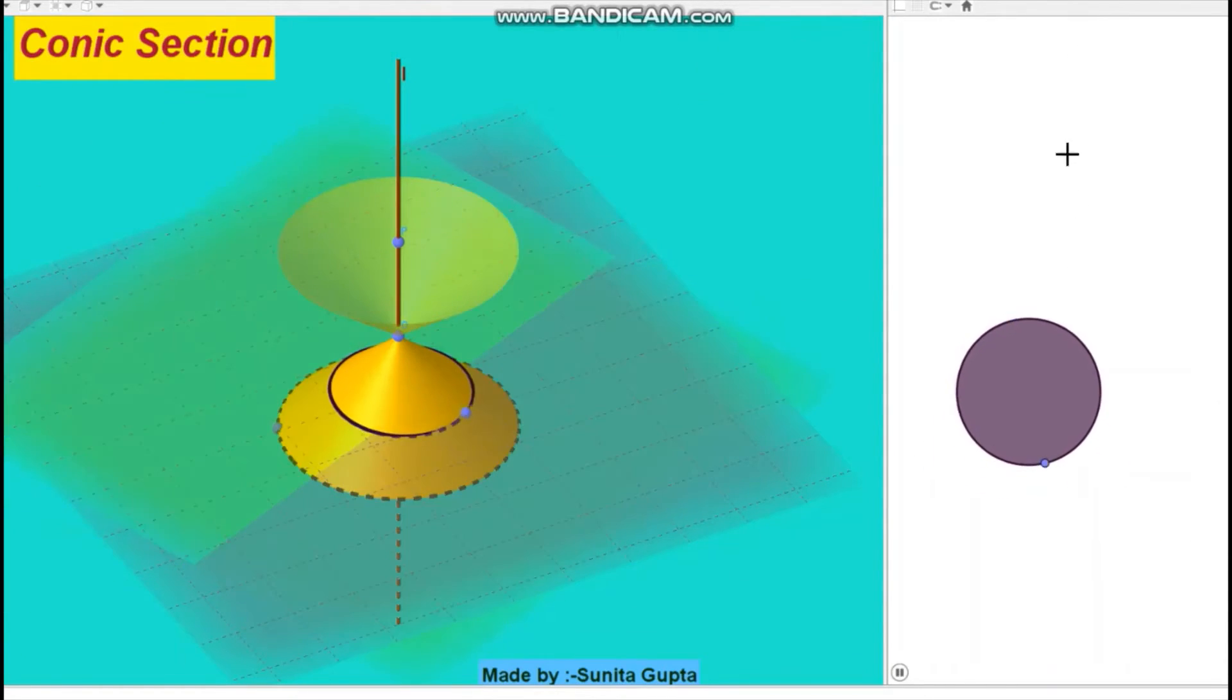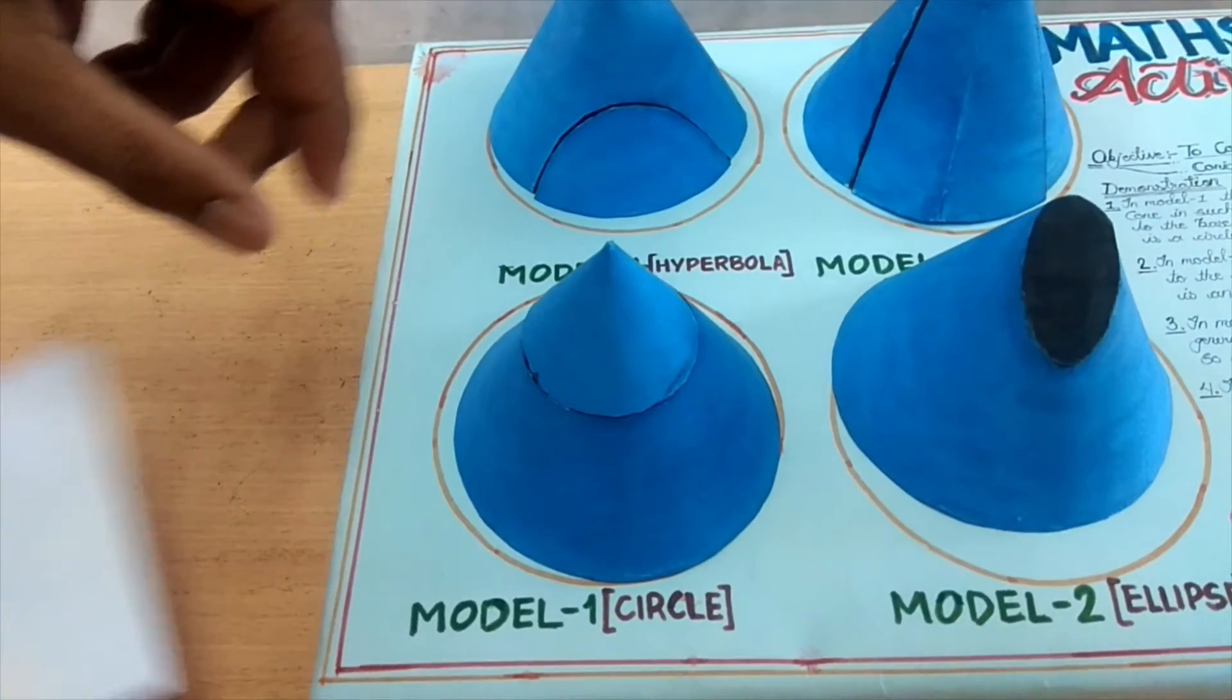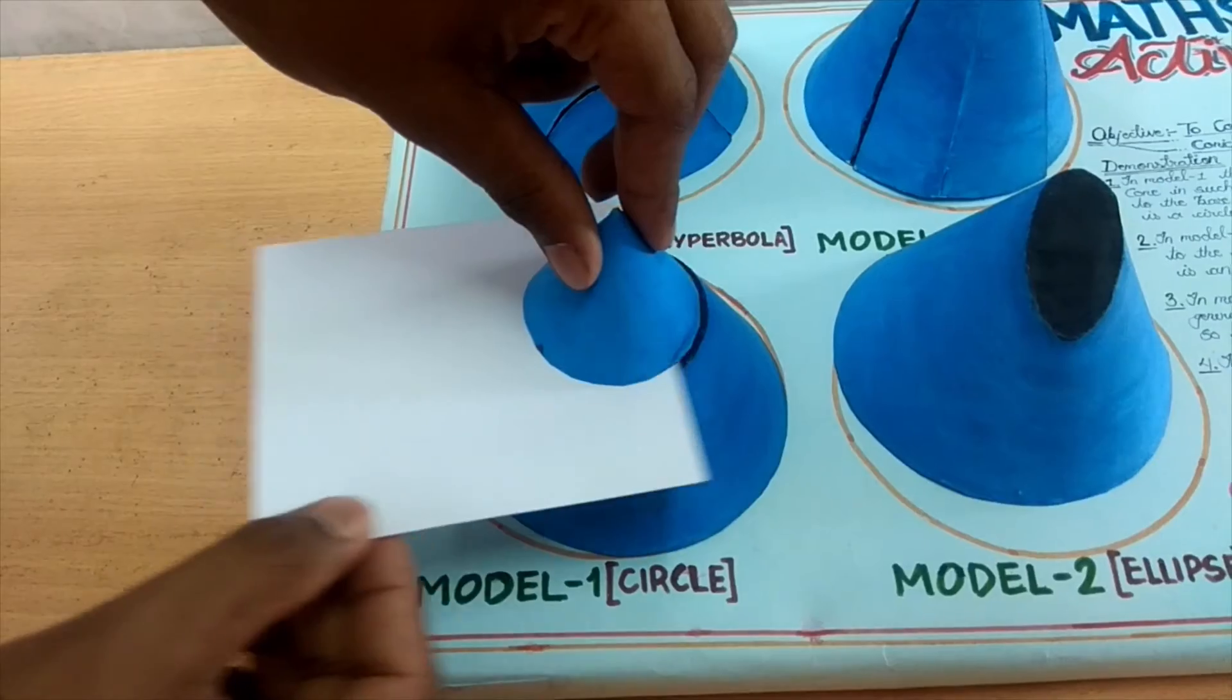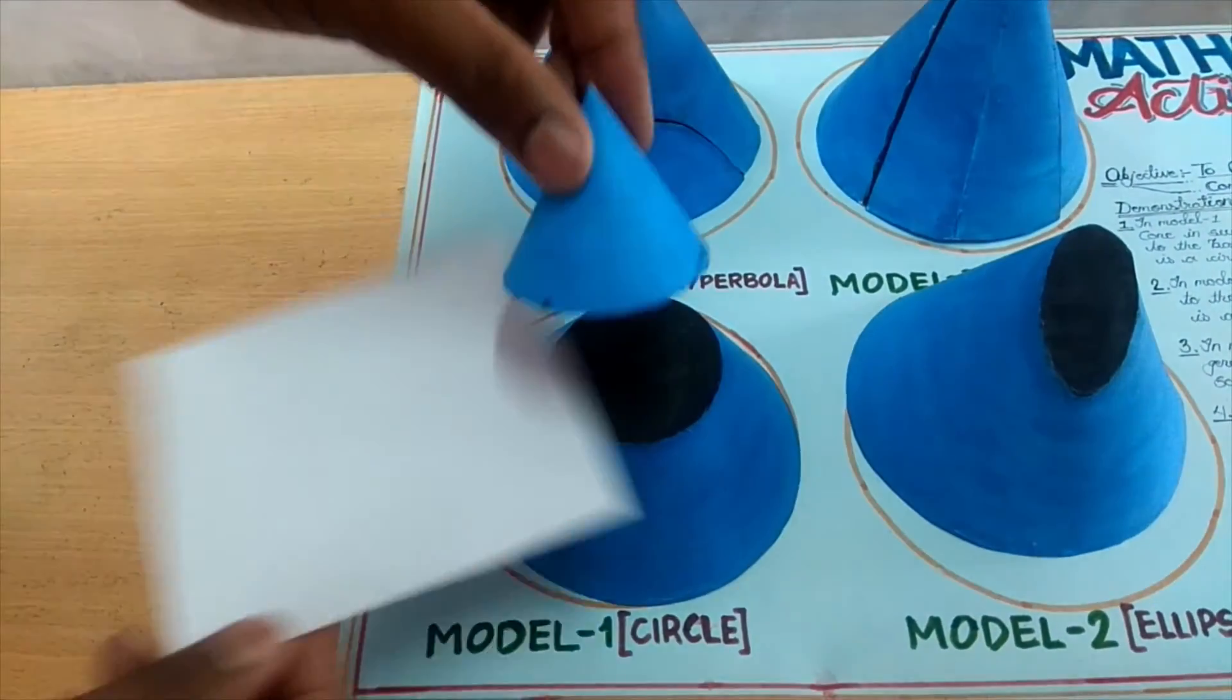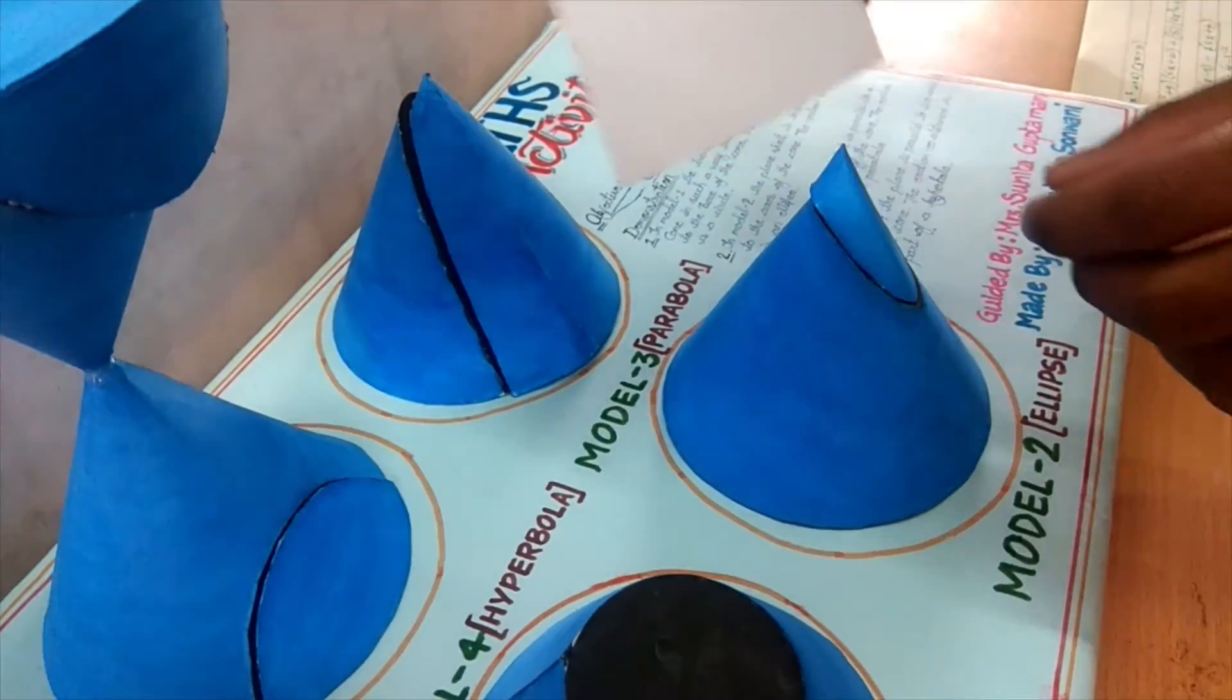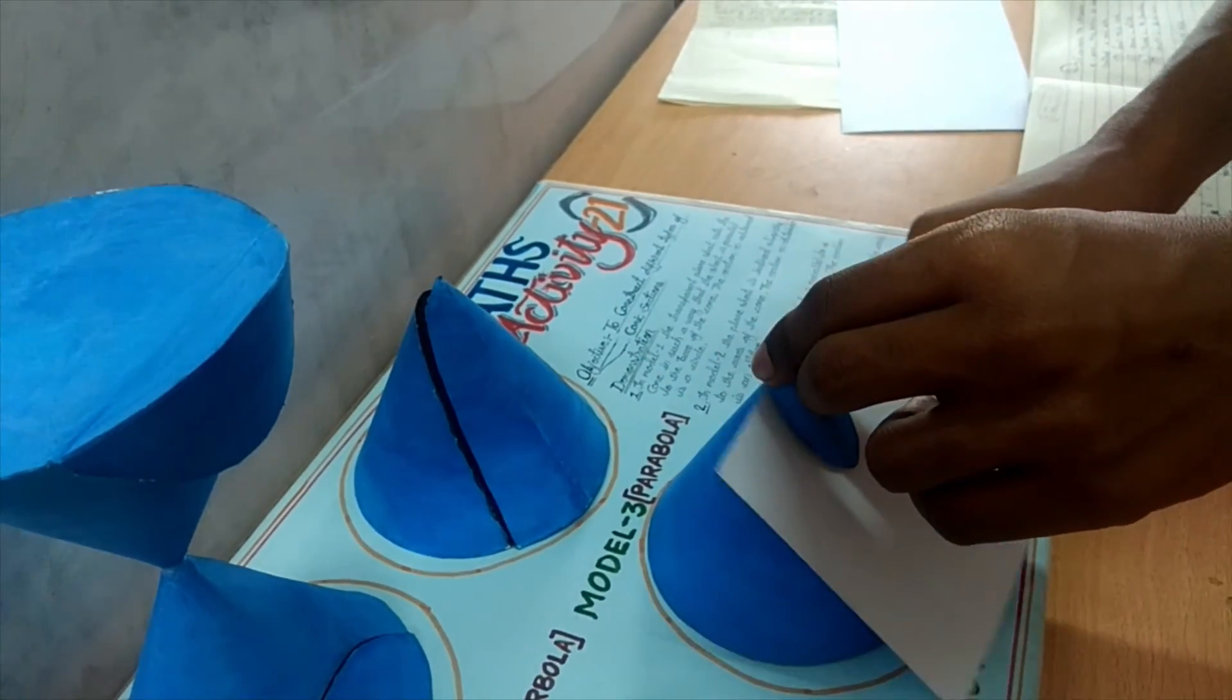There are four types of conic sections: circle, ellipse, parabola, and hyperbola. When the plane is parallel to the base of the cone, or beta equals 90 degrees, the section obtained is a circle. When the plane is slightly inclined to the axis of the cone, the section obtained is an ellipse.